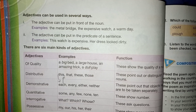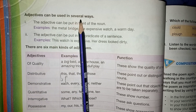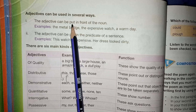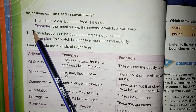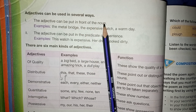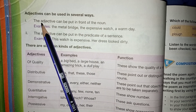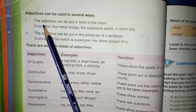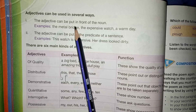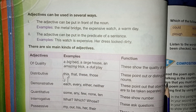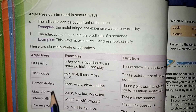Okay students, page number 70 پہ آئیں۔ یہاں بتایا ہے کہ adjectives can be used in several ways - adjective کو کسی بھی طریقے سے sentence میں use کر سکتے ہیں۔ Number one: the adjective can be put in front of the noun - ہم adjective کو noun کے front میں put کر سکتے ہیں۔ اس kind کو attributive adjectives کہتے ہیں - اس میں ہمیں پہلے سے پتا ہوتا ہے کہ noun کے بارے میں کوئی چیز بتانی ہے۔